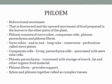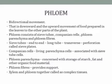Phloem transports the food manufactured by leaves to various parts of the plant. The direction is bidirectional — upward and downward. The phloem tissue consists of four types of cells: sieve tubes, companion cells, phloem parenchyma, and phloem fibers. Sieve tubes are cylindrical cells devoid of a nucleus, placed end to end forming a long tube-like structure; their transverse walls have perforations called sieve plates.